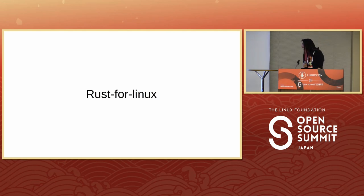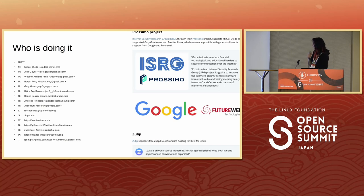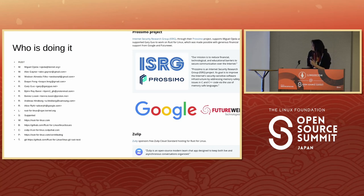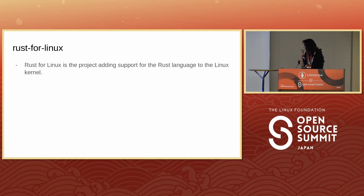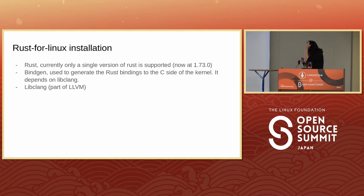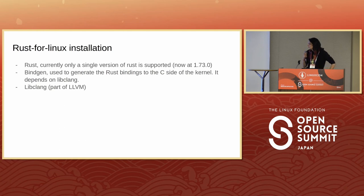Rust for Linux is the project that is adding support for Rust to the Linux kernel. It is maintained by — I think Michael and some others — with maintainers, reviewers, and work supported by various companies. If you want to use it, there are many guides online explaining how to use Rust for Linux.